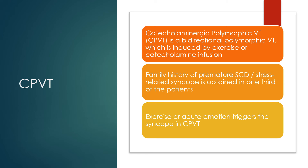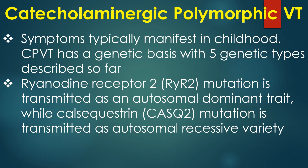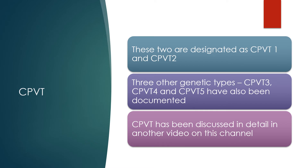Catecholaminergic polymorphic ventricular tachycardia is a bidirectional polymorphic VT induced by exercise or catecholamine infusion. Family history of premature sudden cardiac death and stress-related syncope is obtained in about a third of patients. Exercise or acute emotion triggers syncope in CPVT, and symptoms typically manifest in childhood. CPVT has a genetic basis with 5 genetic types described so far. Ryanodine receptor 2 mutation is transmitted as an autosomal dominant trait, while calsequestrin mutation is transmitted as an autosomal recessive variety.